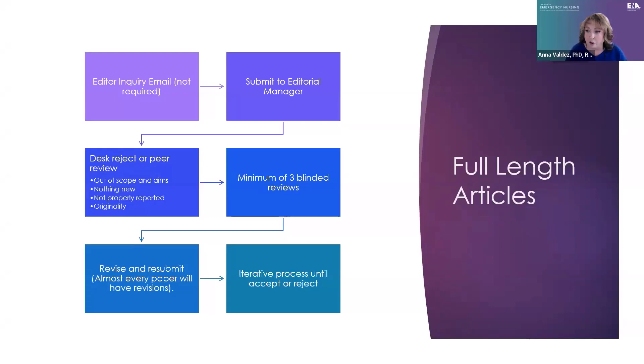We generally don't support what we call 'salami slicing' — when you have one study and try to get three manuscripts out of it. This is an ethical issue: it can confuse readers about the evidence, making them think there are three studies when there's only one, and it dampens the impact of that research. There are some exceptions — really large epidemiology-type studies or studies with multiple different arms — but you still need to share that with the editor so we can make a decision together.